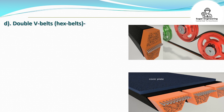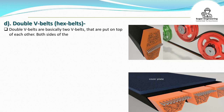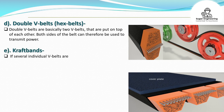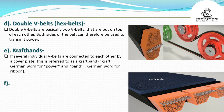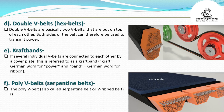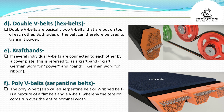D. Double V-belts (Hex belts) — Double V-belts are basically two V-belts put on top of each other. Both sides of the belt can therefore be used to transmit power. E. Craft Bands — If several individual V-belts are connected to each other by a cover plate, this is referred to as a craft band. 'Kraft' equals the German word for power and 'Band' equals the German word for ribbon. F. Poly V-belts (Serpentine belts) — The poly V-belt, also called serpentine belt or V-ribbed belt, is a mixture of a flat belt and a V-belt, whereby the tension cords run over the entire nominal width (neutral axis), in contrast to the craft band.